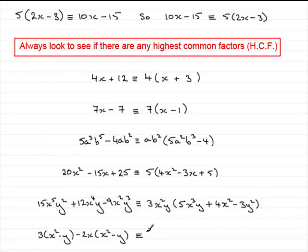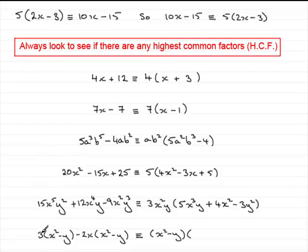Lastly, this one. We've got a couple of terms, and the common factor here is the bracket expression x squared minus y — it appears in both terms. So x squared minus y is the common factor and we write a bracket. What are you multiplying x squared minus y by to give the first term? Just simply 3. And in the second term, what are you multiplying x squared minus y by? It's got to be minus 2x. So the answer is bracket x squared minus y bracket 3 minus 2x.